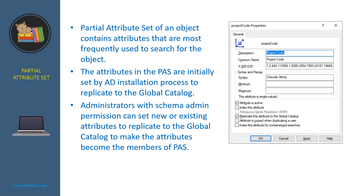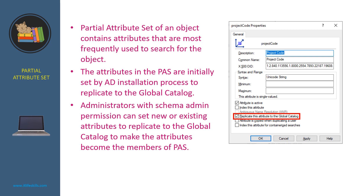So what is partial attribute set? The partial attribute set of an object contains attributes that are most frequently used to search for the object. The attributes in the partial attribute set are initially set by the AD installation process to replicate to the global catalog. Later on, administrators with schema admin permission can set new or existing attributes to replicate to the global catalog, making those attributes members of the partial attribute set.